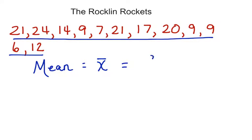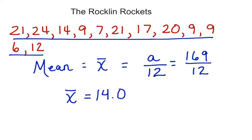So we can call the scores A, and we can say that A, when we find that sum, is going to be divided by 12. So let's add all of those scores up and then divide by 12. When we add those scores, we get a total of 169. And we're going to divide that by 12. When we divide that by 12, we have a mean of 14.08.